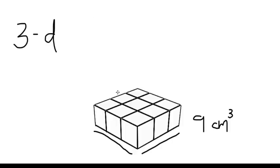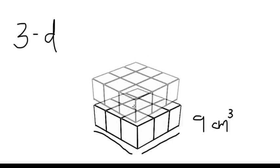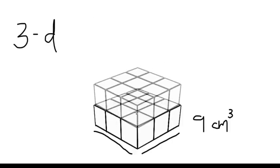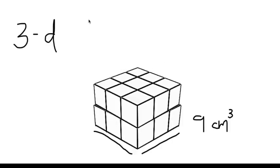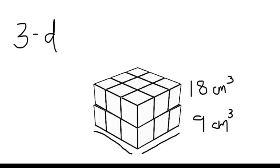Now we're going to add another layer to this shape, because finding volume is just adding layers. So the volume of our first shape was nine centimeters cubed. Now take a look and see what the volume of this new shape is — all we did was add another layer. So essentially we're just adding another nine, making it 18 centimeters cubed. All we did was add one more layer of nine.